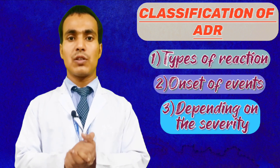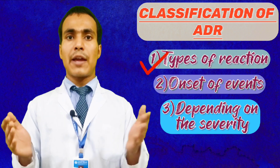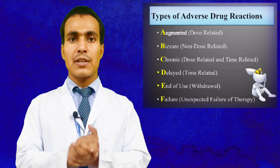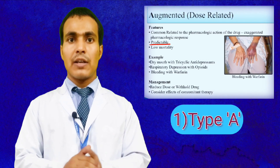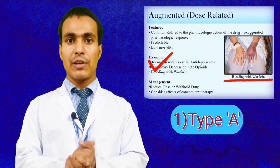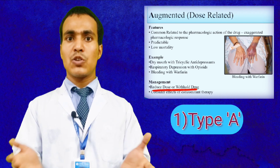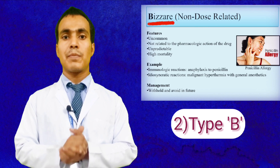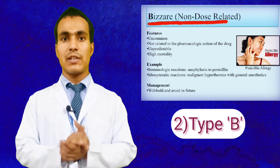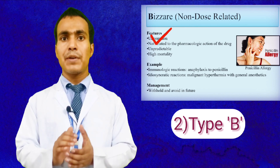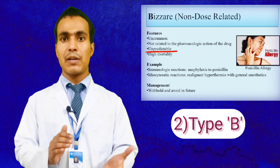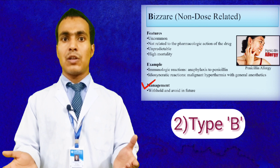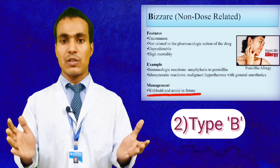Classification of ADRs by type of reaction: Type A — Augmented, which is dose-related. Its feature is predictable; example is bleeding with warfarin; management is reduced dose or withhold drug. Type B — Bizarre, which is non-dose-related. Its feature is unpredictable; example is anaphylaxis to penicillin; management is withhold the drug and avoid in future.